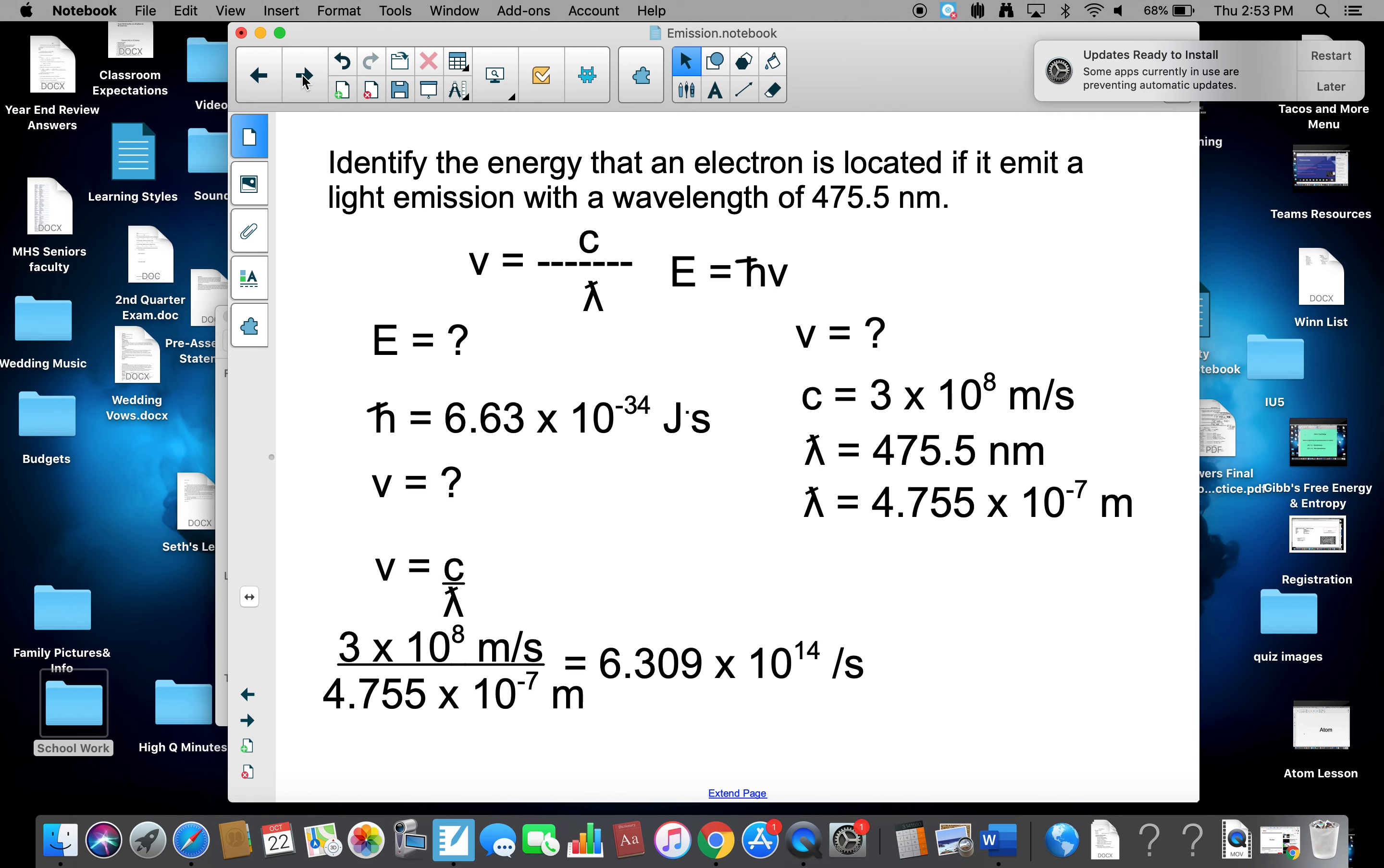Nu equals C over lambda, which gives us 3 times 10 to the eighth meters per second, divided by 4.755 times 10 to the minus seventh meters. Meters cross out. We get 6.309 times 10 to the 14th per second.